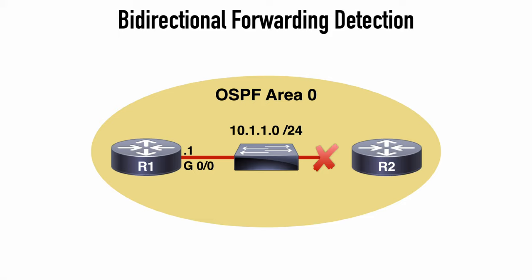R1 is going to continue to send traffic in a situation we call black holing. So the traffic goes over to the Layer 2 switch even though it can't reach the destination of R2, and it will do that until our configured protocol timers expire and let R1 know that the OSPF neighbor is down. We do have some options for lowering those OSPF timers to help detect a failure much quicker, but nowhere near as quickly as Bidirectional Forwarding Detection offers. So let's jump into a lab and take a look at the configuration of BFD.